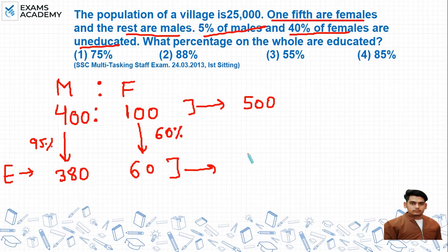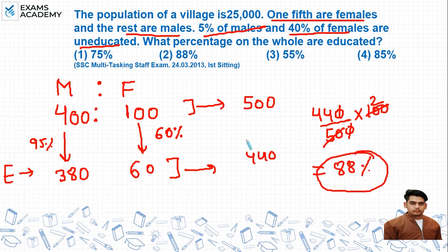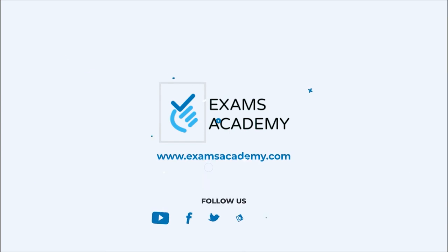अब percentage of educated population find करने के लिए 440 को 500 से divide करके 100 से multiply करेंगे। 440/500 × 100 = 88%। तो हमारे पास educated population की percentage आ रही है 88%।